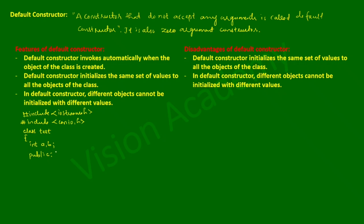In the public section I'm going to write a default constructor. As we know, the constructor name is the same as the class name and it does not have any return type. So the class name is test, the parentheses are empty since it takes no arguments. Inside the constructor definition I'm going to initialize data member a equal to 10 and b equal to 20.